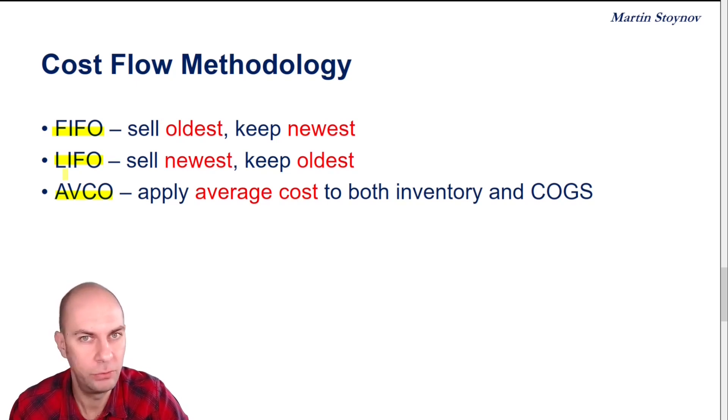So FIFO, First In, First Out. Remember, first means the oldest unit - the first unit I bought or the first unit that was already in my warehouse is the one that I want to sell. So I'm going to sell my oldest units. So they're going to go to COGS. The newest units will be kept in inventory.